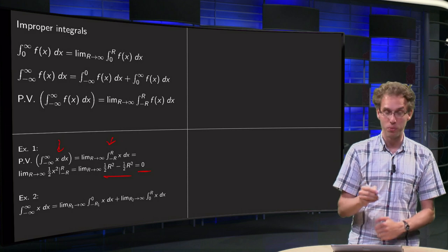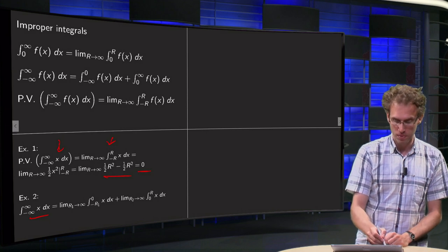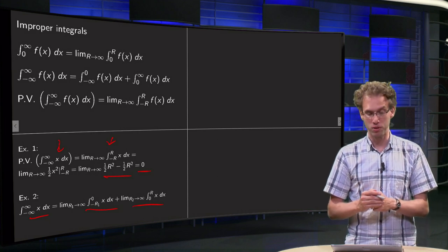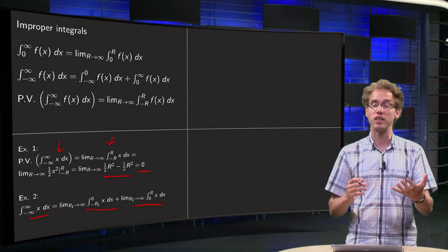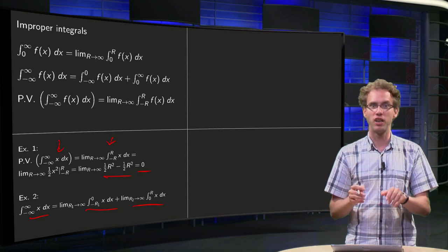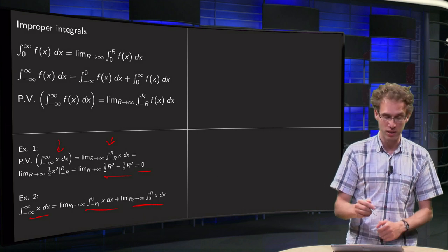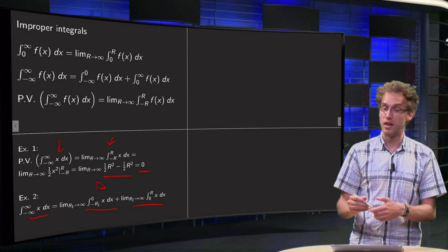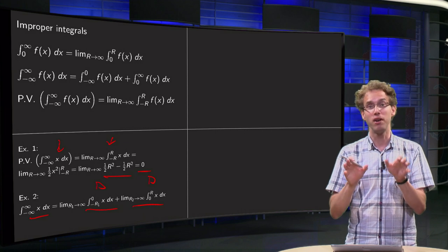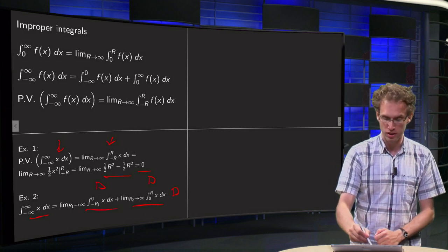However, if you compute the real integral of x from minus infinity to infinity, you have to split it up first: the limit of r₁ to infinity of the integral from minus r₁ to zero, plus the limit of r₂ to infinity of the integral from zero to r₂. On the first integral, the antiderivative is one half x², and plugging in r₁ and taking it to infinity shows this integral diverges. Similarly, the other one diverges as well. Because you have to take the two limits separately, you get two diverging integrals, so the result is a diverging integral.